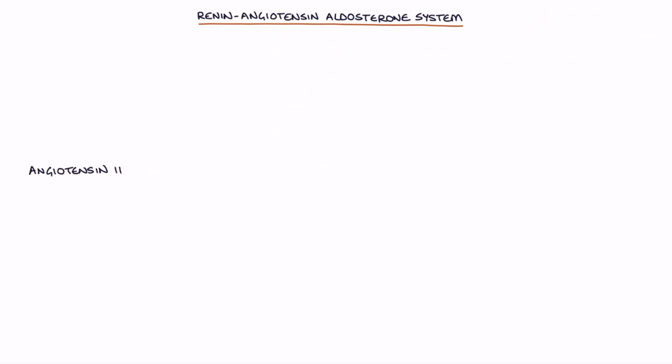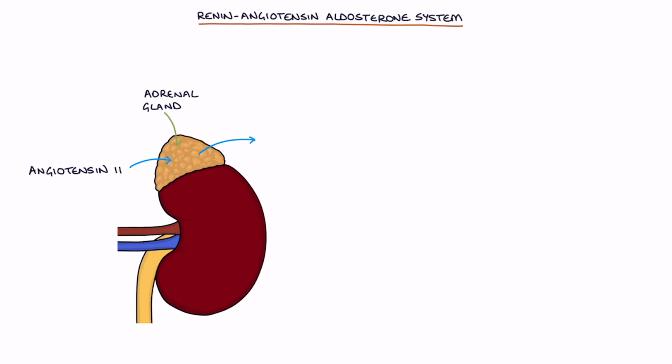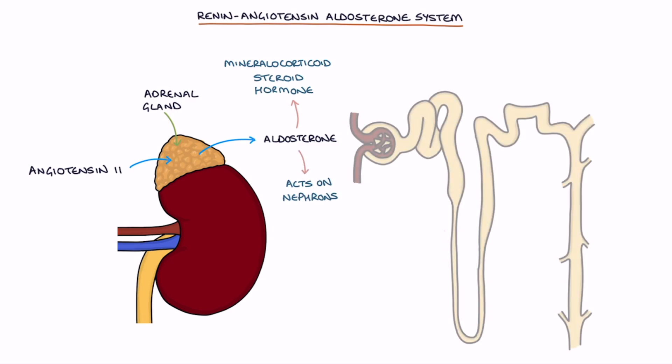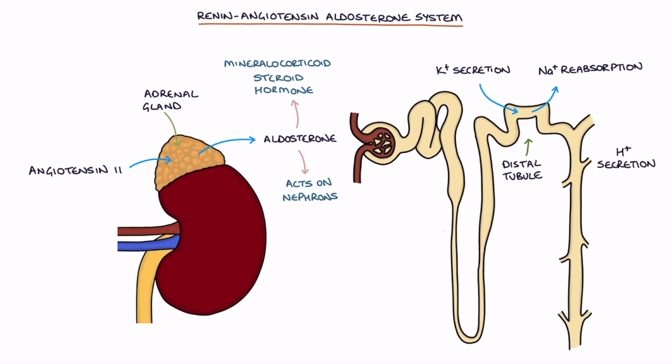Angiotensin 2 stimulates the adrenal glands to release aldosterone. Aldosterone is a mineralocorticoid steroid hormone. It acts on the nephrons of the kidneys to increase sodium reabsorption from the filtrate into the blood from the distal tubule and increase potassium secretion from the blood into the filtrate from the collecting ducts.